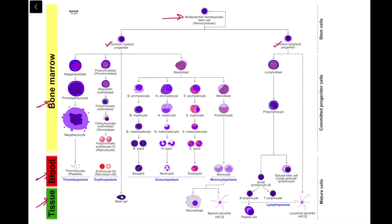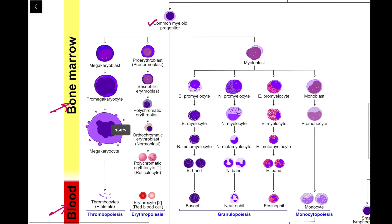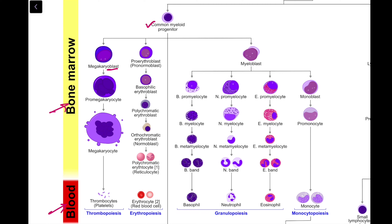The first series under the myeloid side is the platelet series. This series starts from the megakaryoblast, which gives rise to the promegakaryocyte, which further develops into a megakaryocyte. All these stages are present in the bone marrow, and eventually each megakaryocyte will release 2000 to 4000 platelets into the peripheral blood.